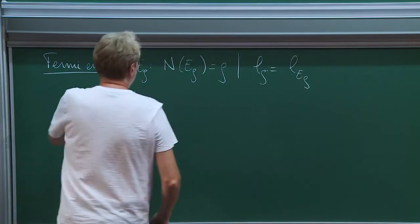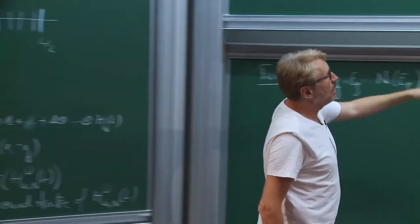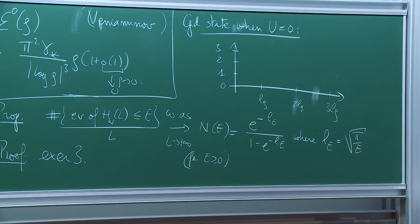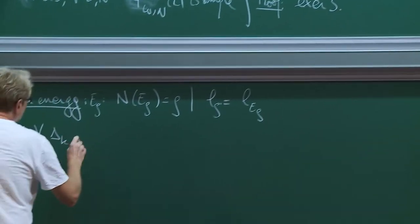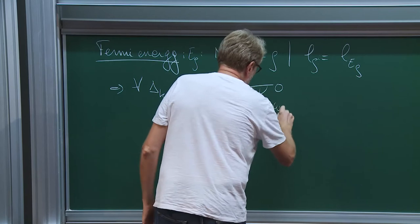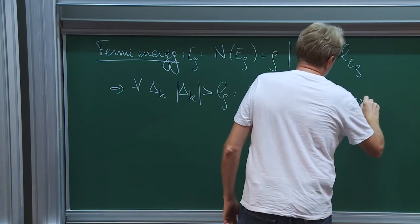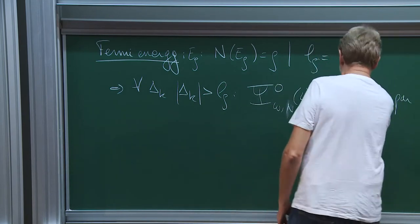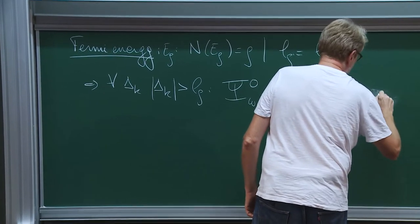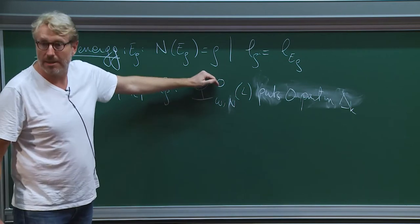What does this correspond to? This length L_rho is the length of the smallest piece having some energy below level E_rho. By what we said yesterday, it means that for any delta_k of length strictly less than L_rho, the free ground state puts zero particles in delta_k. Up to errors — because we have not assumed exactly N divided by L equals rho — but up to the error that N over L converges to rho, this is correct.